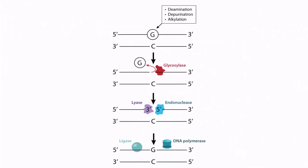Base excision repair is responsible for repairing non-bulky DNA alterations, including deamination, depurination, and alkylation. Carcinogens can cause these non-bulky DNA alterations. In the figure, a circled G represents an altered guanine in the top strand of DNA. First, a glycosylase enzyme recognizes and cleaves the altered base by removing the pyrimidine or purine ring off of the nucleotide. This results in an empty sugar phosphate region known as an apurinic or apyrimidinic site, sometimes called an AP site.